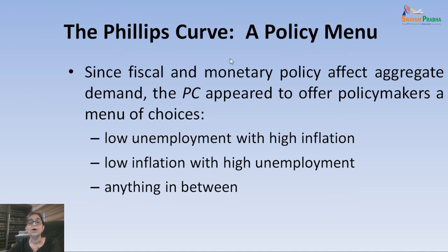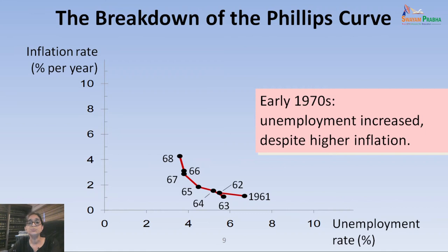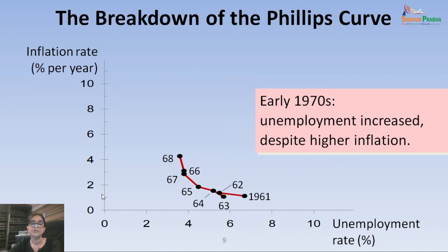The Phillips Curve was seen as a stable relationship between unemployment rate and inflation rate in advanced economies, and policies revolved around it. This was seen to be stable until the 1960s. From 1961 to 1968, we saw an inverse relationship between inflation and unemployment rate — when inflation rate was high, unemployment rate was low. For example, in 1968 we saw an inflation rate of around 4% with about 3–3.5% unemployment rate, while in 1961 when unemployment was more, inflation was less.